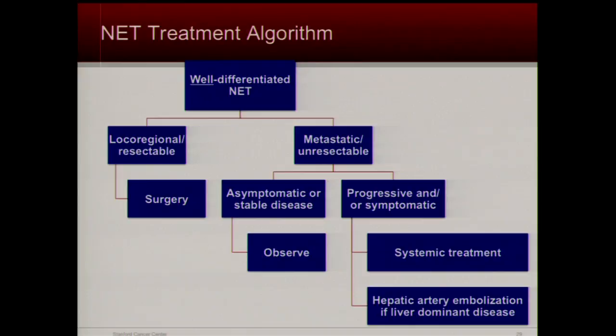In sum, the treatment algorithm is as follows. Once we're confident with our pathologists and radiologists that we have a well-differentiated neuroendocrine tumor, if it's locally or regionally extending, we send it to a surgeon to remove. If it's not amenable to resection and there are no symptoms, sometimes we'll just watch it — another scan in three months, then six months if no change. If there's progressive disease or people are symptomatic, we need to treat with systemic treatments or local treatments for liver-dominant disease, such as putting catheters directly into the liver.